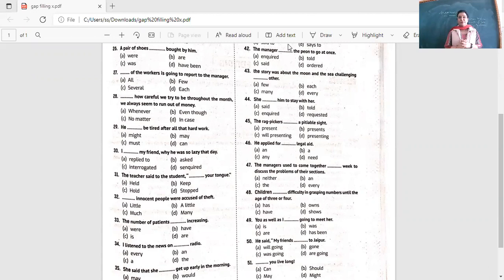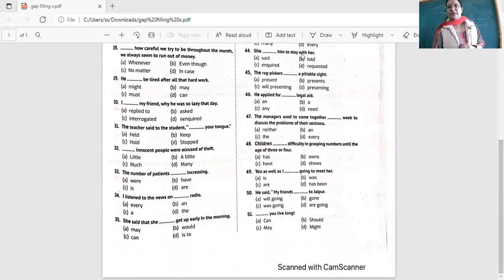He applied for dash legal aid. He applied for an, no. This is not the article we use over here with the consonant sound. A, absolutely correct. Any legal aid. No, it is not that. He need is absolutely wrong. He applied for a legal aid. The managers used to come together dash week to discuss the problems of their sections. The managers used to come together every week to discuss the problems of their sections. So every week, yes.